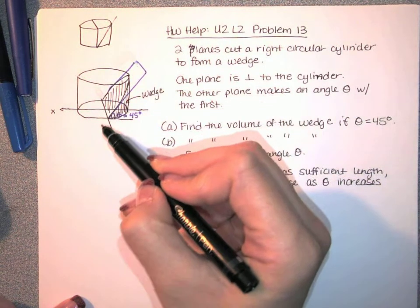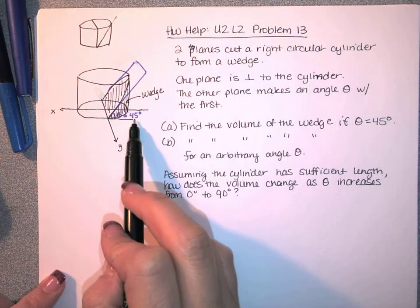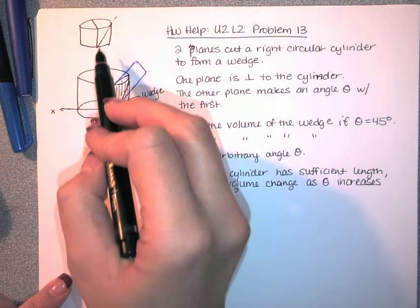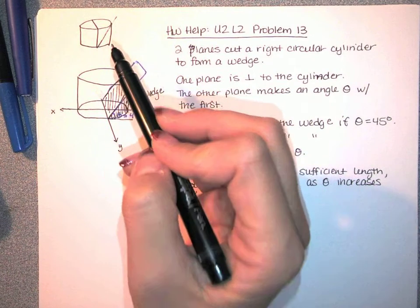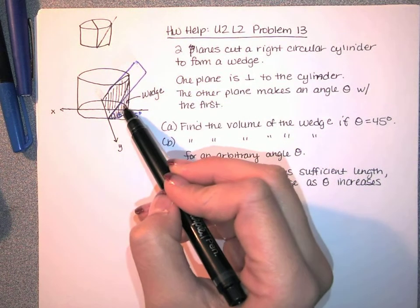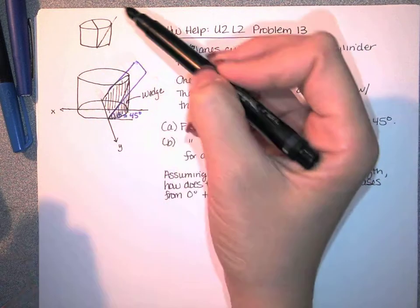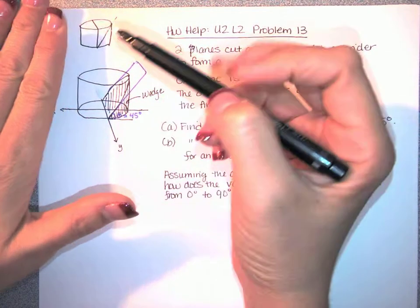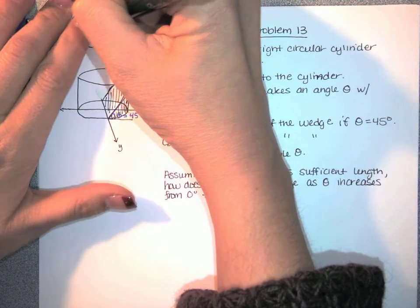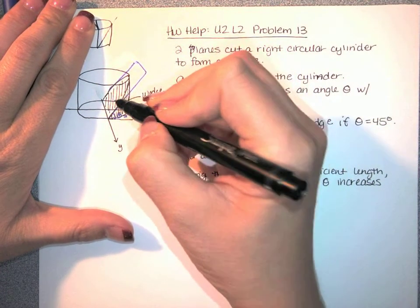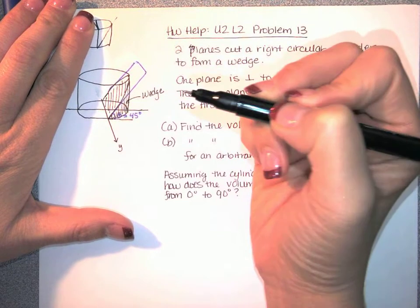I've tried to draw the second plane in blue. The angle for part A is 45 degrees. This is going to cut this into two pieces. A lot of people thought that the volume of this piece would just be one-fourth the volume of the cylinder, but that's not the case. We are taking half the volume of the cylinder and then splitting it into two pieces.